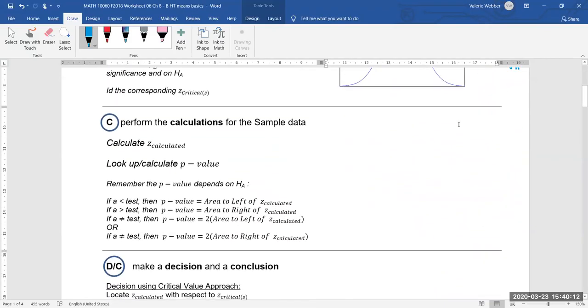We'll then move on to our calculation for z calculated and remember that's going to be for our sample data. And again remember for means z calculated is going to equal our point of interest x bar minus our center mu divided by our spread sigma over root n.